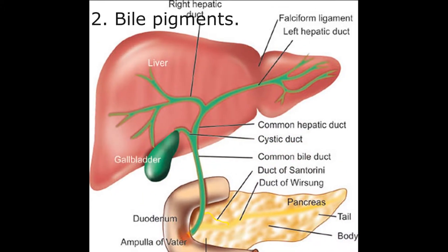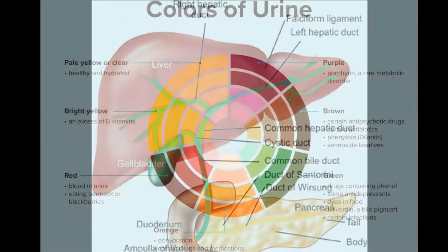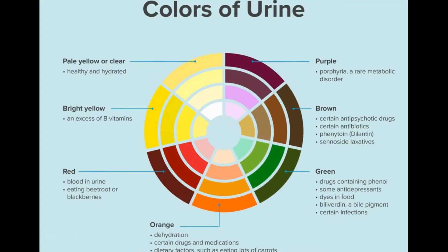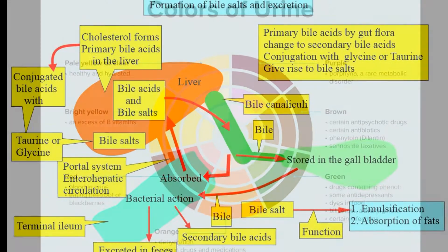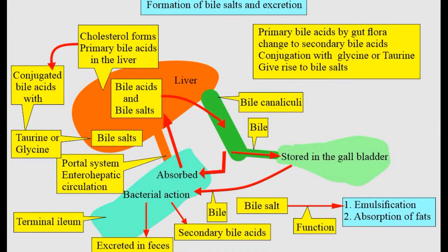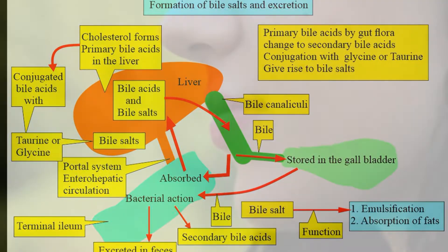Bile pigments: These are formed in the liver. They give a yellowish tinge to the urine. Excess of bile pigments become harmful, hence they are removed from the body.